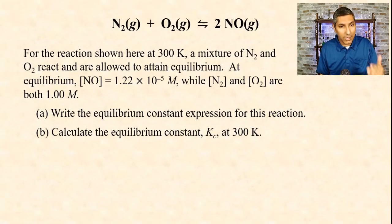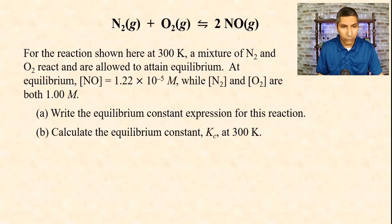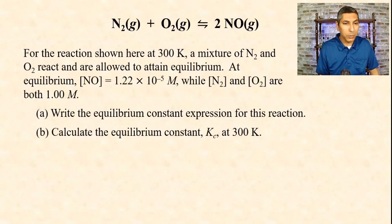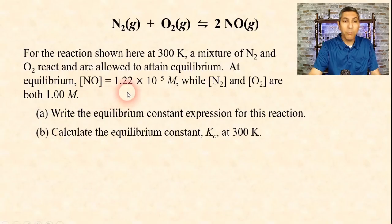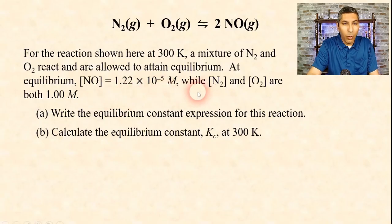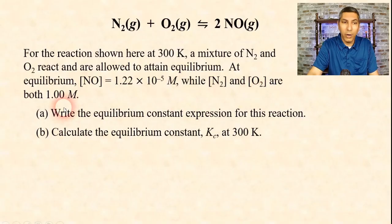So here we have an equation, and it says: for the reaction shown here at 300 kelvins, a mixture of N2 and O2 gases react and are allowed to attain equilibrium. At equilibrium, the concentration of NO gas equals 1.22 times 10 to the negative fifth molar, while N2 and O2 gases are both 1.00 molar.